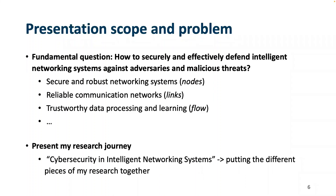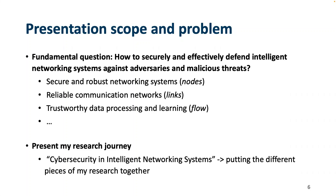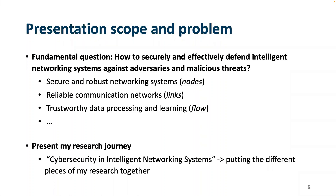To address this comprehensively, we need to consider specific sub-questions. First, how do we build and design secure and robust networking systems — from a graph theory perspective, we're talking about nodes or specific endpoints. Second, how do we design and sustain reliable communication networks — from a graph theory perspective, those are the links. Third, we need to ensure data processing and learning are trustworthy, and that predictive analytics at the edge network are ethical and lawful — which involves AI and machine learning.